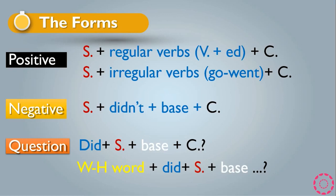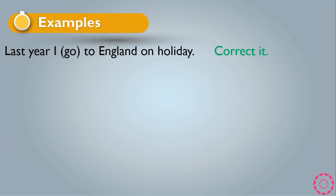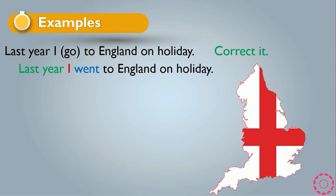Let's see some examples. 'Last year I go to England on holiday' — corrected to past simple it becomes 'Last year I went to England on holiday.' Go became went because it's an irregular verb, so you have to memorize irregular verbs. Also 'last year' is itself a time expression in the past.